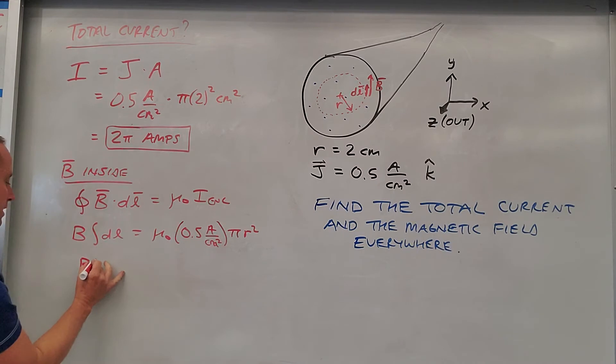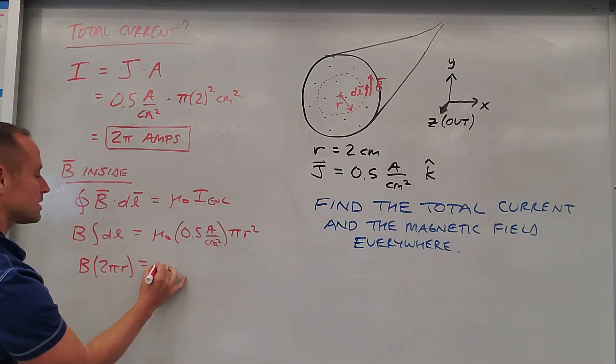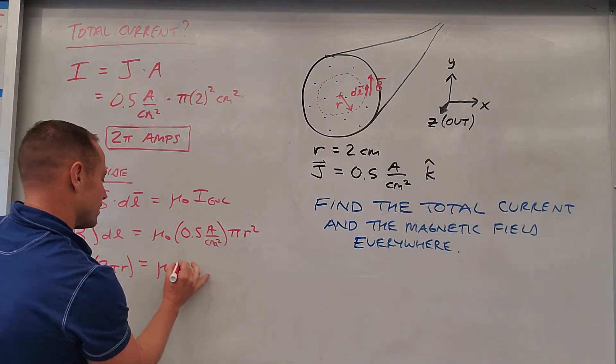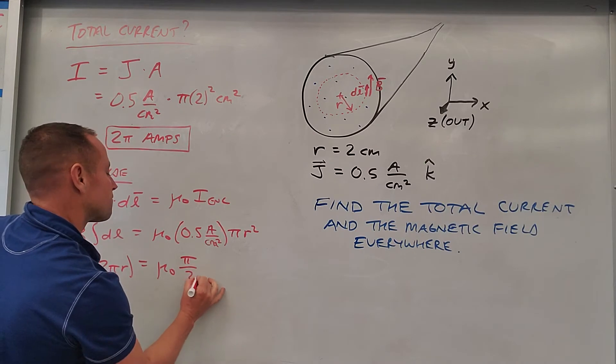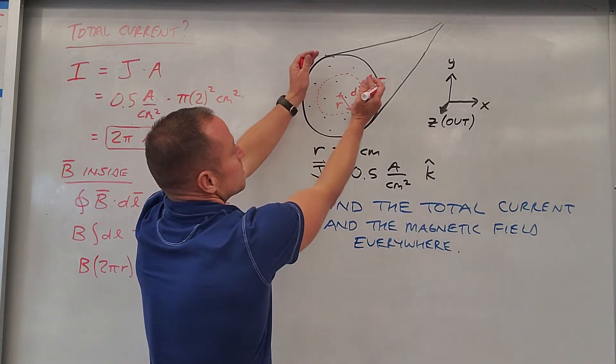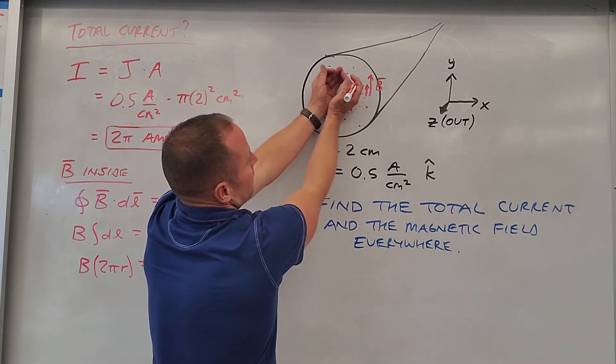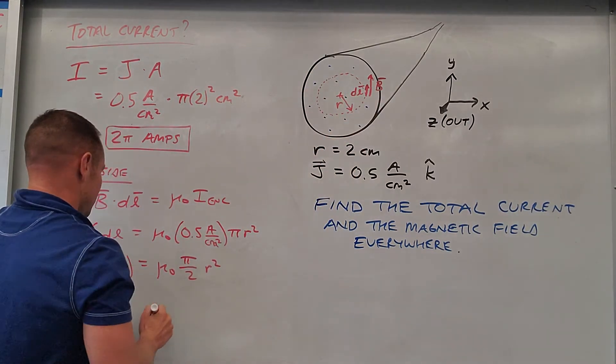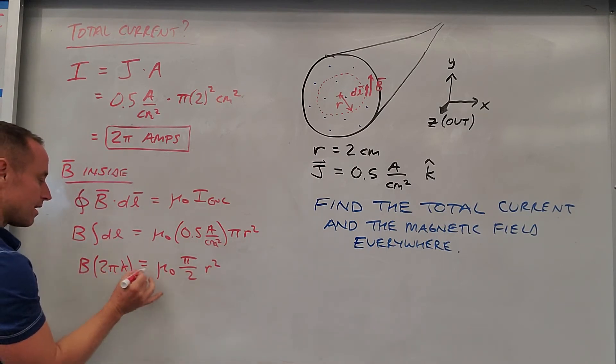now the integral dl - that just means add up all the dl's - well that's just going to give you the entire circumference. So that's going to be B times 2πr equals μ₀ times π/2 r². So you notice the enclosed current actually depends on radius, which makes sense because